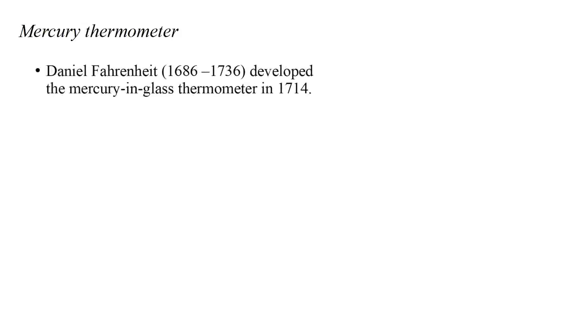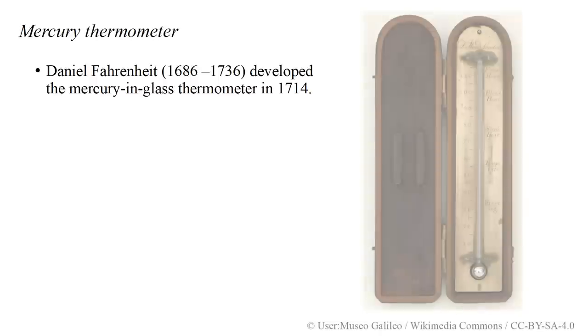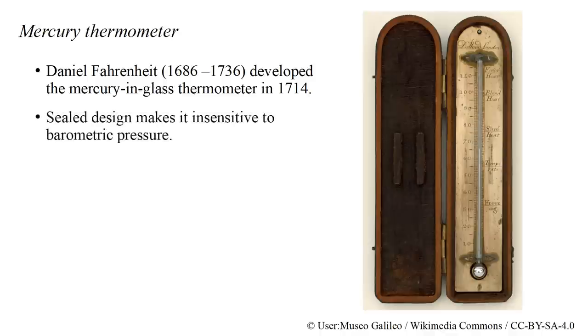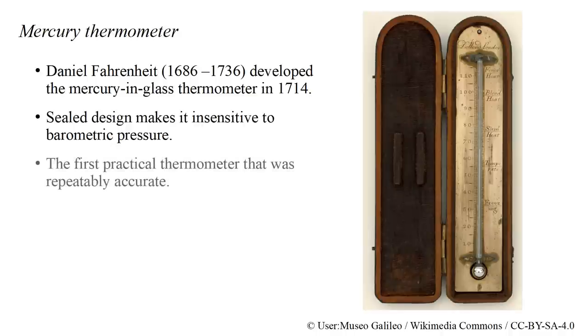Scientifically useful thermometers were first produced by Daniel Fahrenheit with his development of the mercury in glass thermometer in 1714. This had a volume of mercury enclosed in an evacuated sealed glass tube. The sealed design makes it insensitive to barometric pressure.